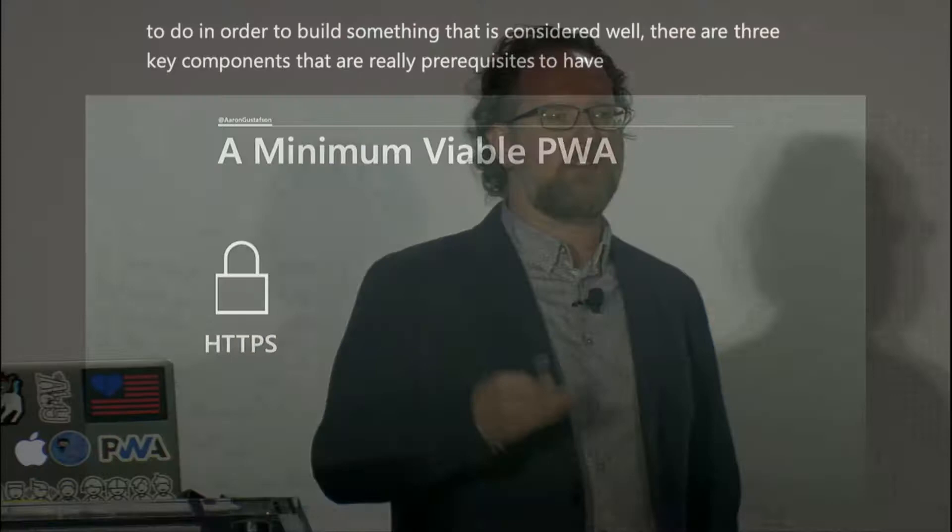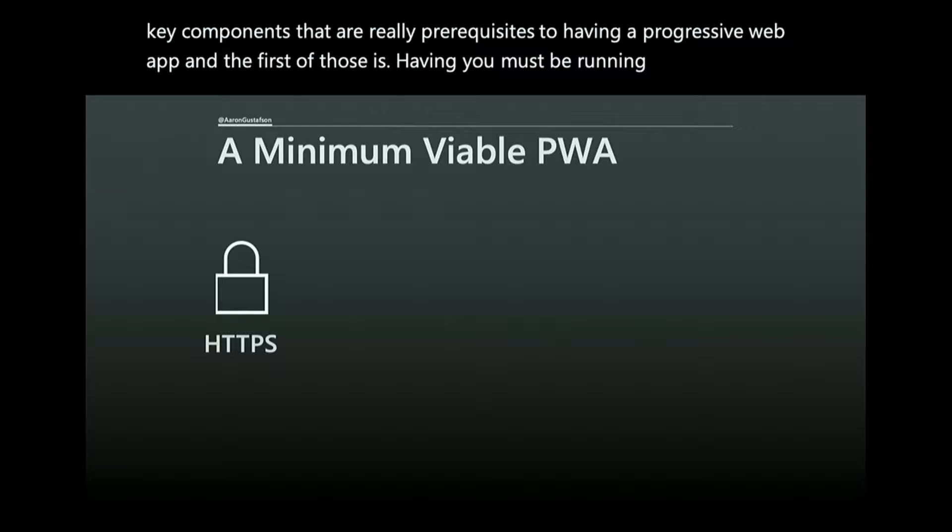As developers, we want technical definitions — what exactly do I need to do to build something considered a progressive web app? There are three key components that are prerequisites. The first is having a secure site: you must be running under HTTPS. This is generally a good idea and is much easier to implement nowadays. A lot of useful JavaScript APIs are gated by HTTPS, including service worker, geolocation, and anything dealing with sensitive user information.